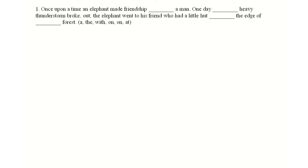To learn these articles and prepositions, I have videos in my Learn Easily YouTube channel - watch them and learn them easily. While doing these activities also, I am going to explain how to write these articles and prepositions in detail. Here, the first activity: Once upon a time an elephant made friendship dash a man. One day dash heavy thunderstorm broke out. The elephant went to his friend who had a little hut dash the edge of dash forest. See, when you read this lesson, this paragraph, here in the end they are given articles and some of the prepositions which to fill in the blanks.